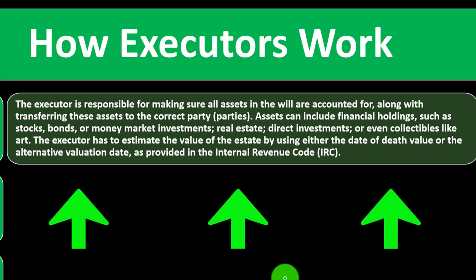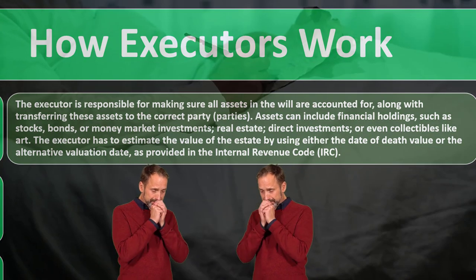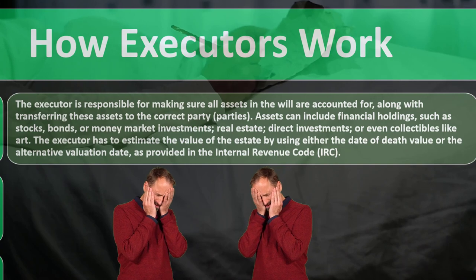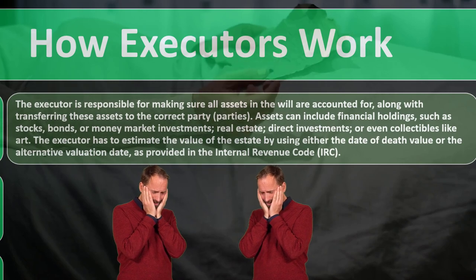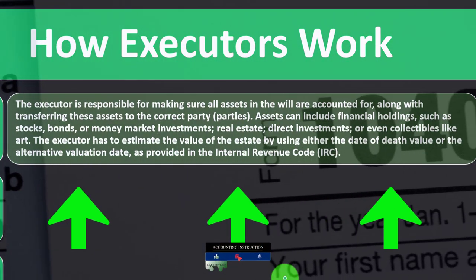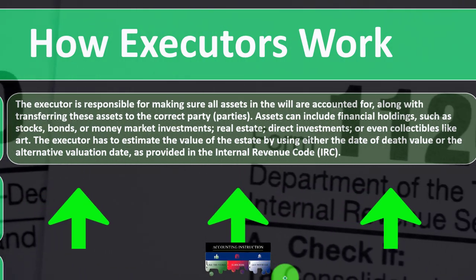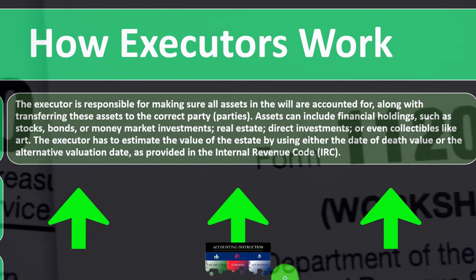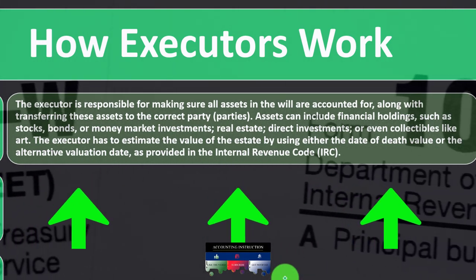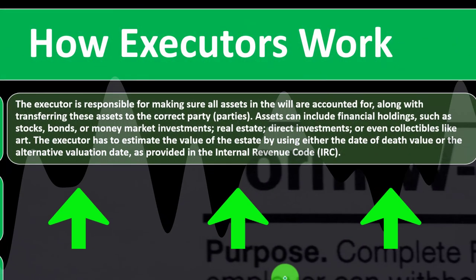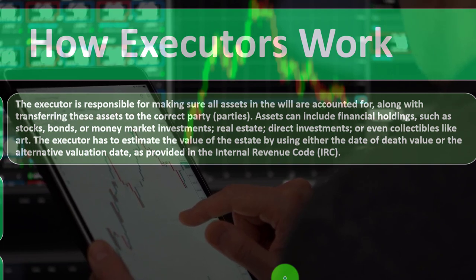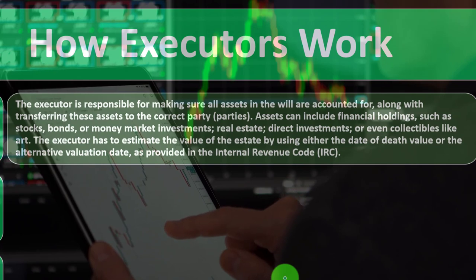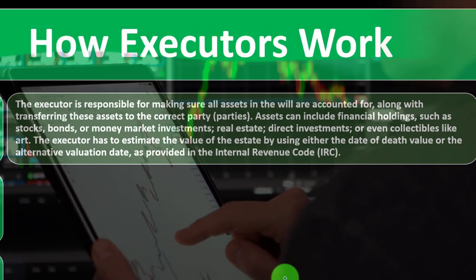Assets can include financial holdings such as stocks, bonds, or money market investments, real estate, direct investments, or even collectibles like art. The executor must estimate the value of the estate using either the date of death value or the alternative valuation date as provided in the Internal Revenue Code. Stocks and bonds can be valued via the stock market; homes and household goods are more difficult since they may be unique.